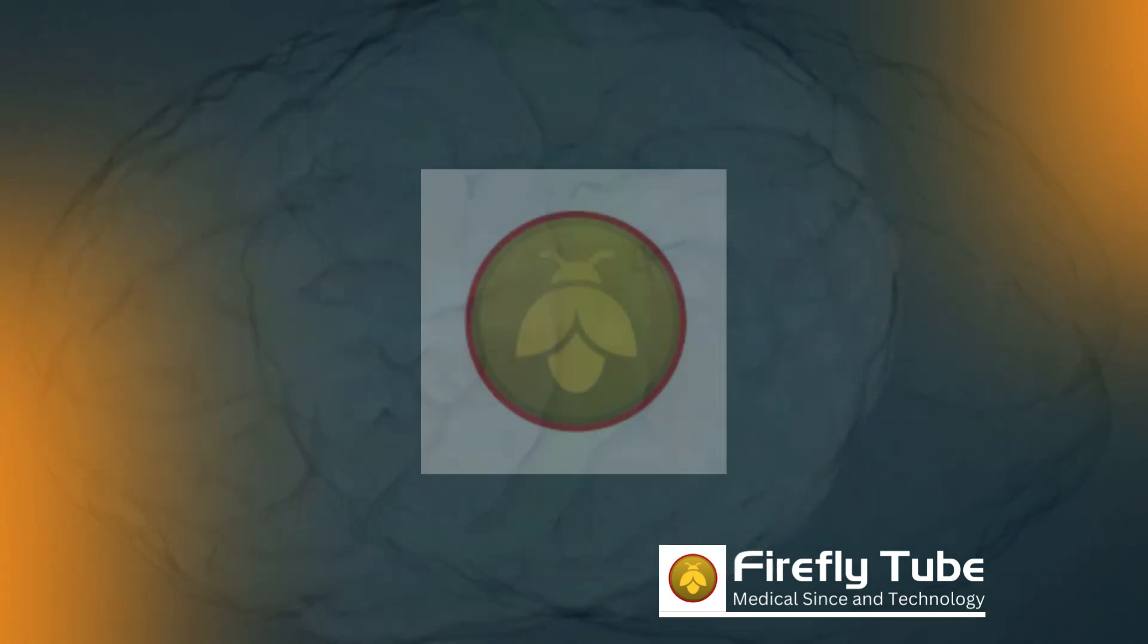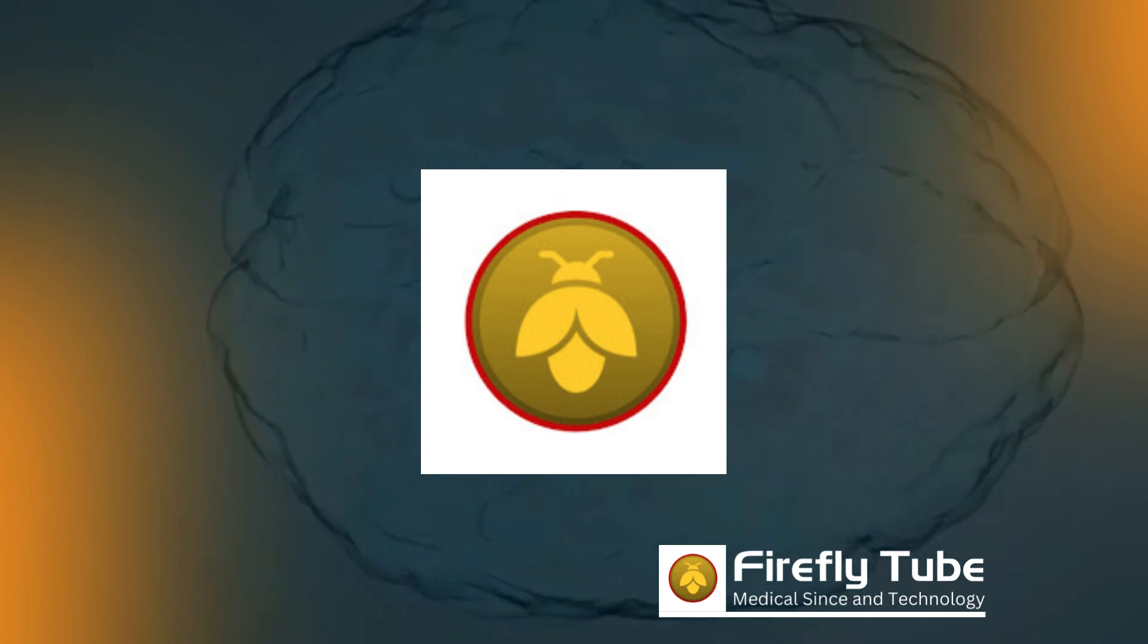It is important to note that the left side of the brain receives signals from the right side of the body, and the right side of the brain receives signals from the left side of the body.